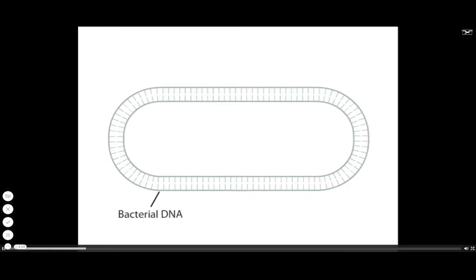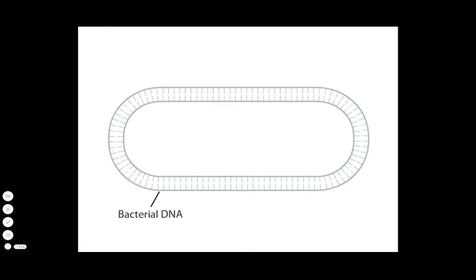The process of bacterial DNA replication involves a number of proteins coming together in a complex machine. DNA replication begins at a single defined DNA sequence of 245 base pairs called OREC.